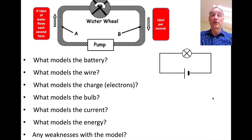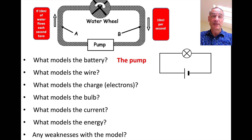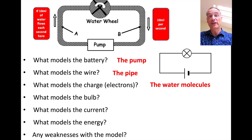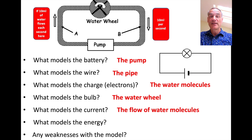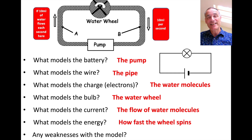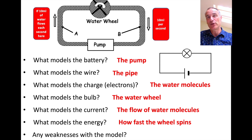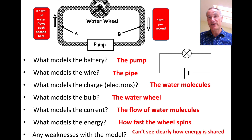Looking at this model, we need to know what models each thing. The battery was modelled by the pump, the wires were modelled by the pipe, the water molecules model the charge, the water wheel models the bulb, and the current is modelled by the flow of water going around. What models the energy is a bit more tricky - we can say that the water wheel goes faster or slower, but we can't actually see in this model the energy being carried. So that is a clear weakness of this model.